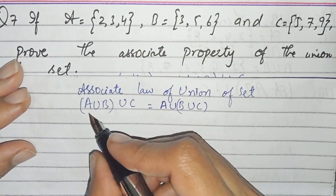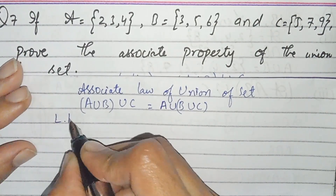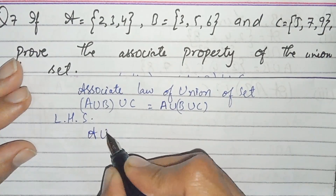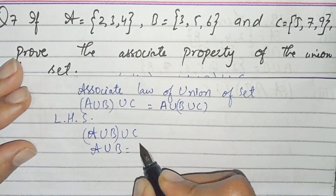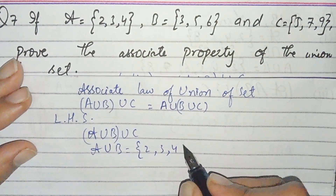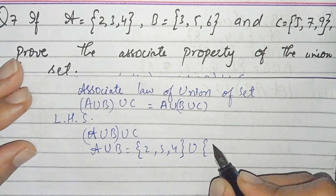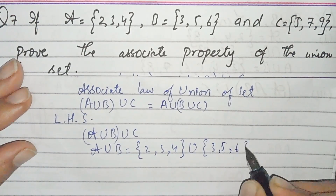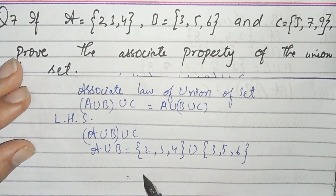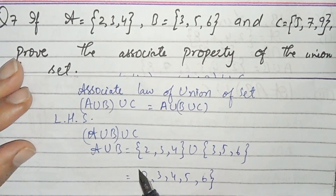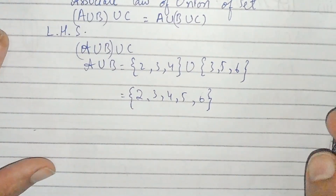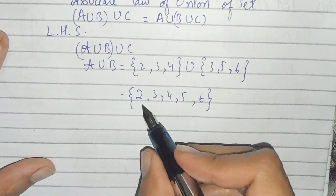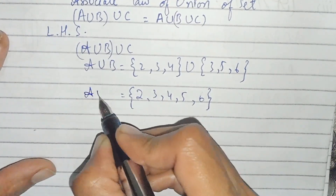First we take the left hand side. Left hand side is (A union B) union C. First we find A union B. A is {2, 3, 4} and B is {3, 5, 6}. Combining them we get {2, 3, 4, 5, 6}. We do not write repeated values in the union, so we do not write 3 twice. This is the union of A union B.